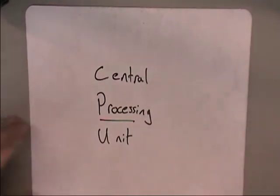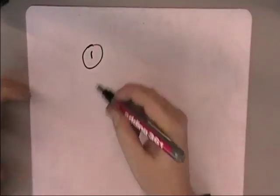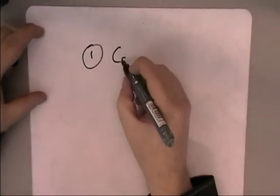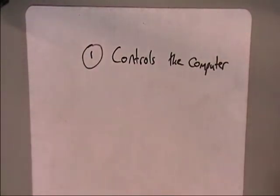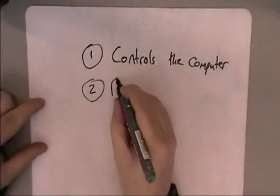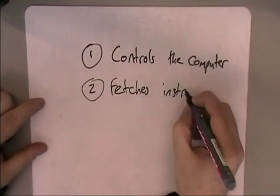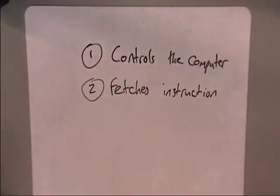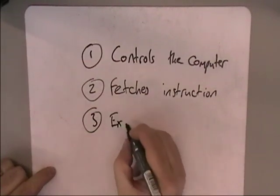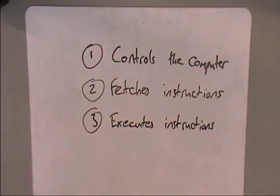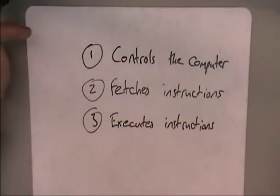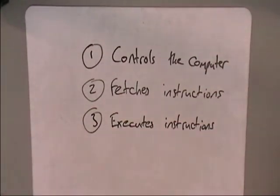So what is a CPU? What does it do? The purpose of the CPU — there are three parts to the answer. The first thing I would say is it controls the computer. It controls the computer by fetching instructions. So if you've got a computer program, the processor goes and fetches them, and once it's got them, it executes those instructions. It controls the computer by fetching instructions and then executing them.